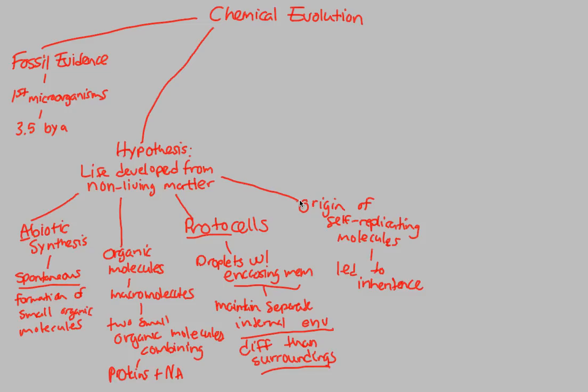Now that we understand what chemical evolution involves and what the hypothesis states behind this origin of life, we can now look at the four basic requirements for chemical evolution to occur. For chemical evolution to happen, we need four requirements.